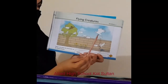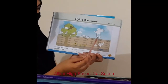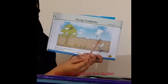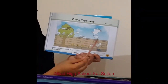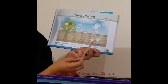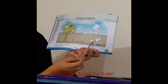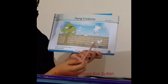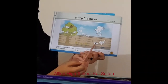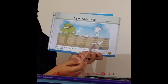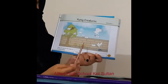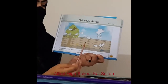Then next hamare paas hai Eagle. Eagle ka E aapne yahan par is box mein write karna hai. Last mein hamare paas hai Pigeon — Pigeon ka P aapne yahan par write karna hai. Yeh aaj aapki activity hai, yeh aapne solve karni hai.